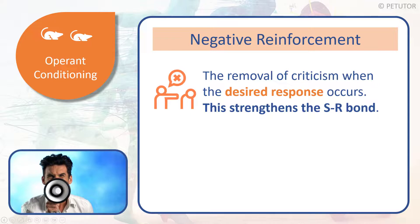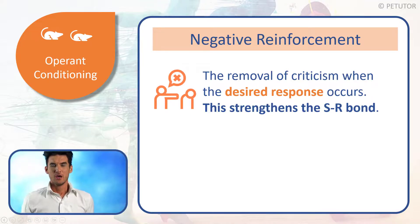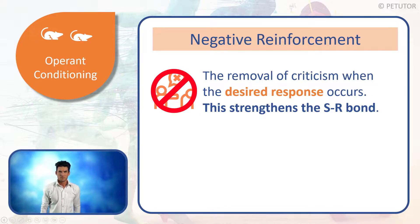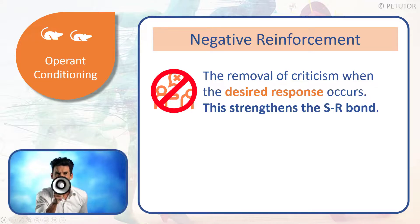The learner thinks, 'Thank goodness for that — I'm going to do that again because I don't like being shouted at, I don't want this criticism.' So they do it again and don't get shouted at. This strengthens the S-R bond, and the criticism is removed.